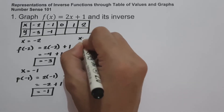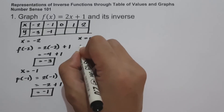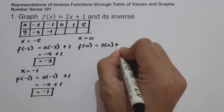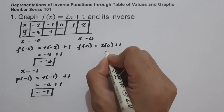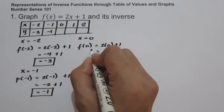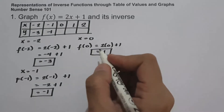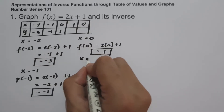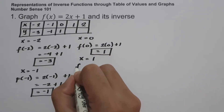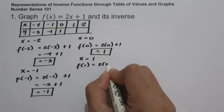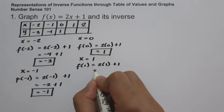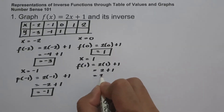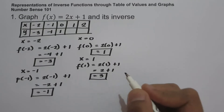For x equals 0: f of 0 equals 2 times 0 plus 1, and that is 1. For x equals 1: f of 1 equals 2 times 1 plus 1. Two multiplied by 1 is 2, plus 1, and that is 3.